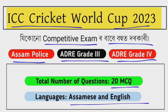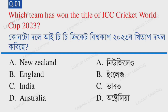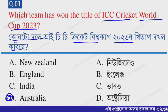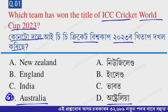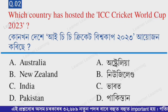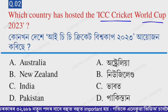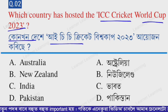So to the first question: which team has won the title of ICC Cricket World Cup 2023? Looking at the options, the correct option is option D — Australia. Australia has won the ICC Cricket World Cup 2023 title.